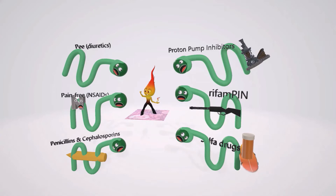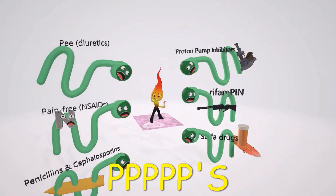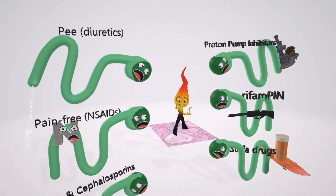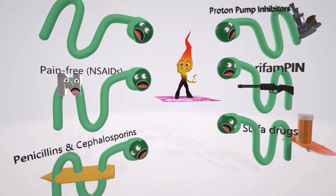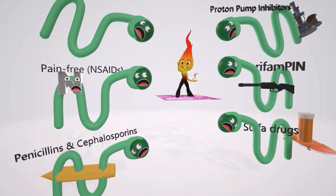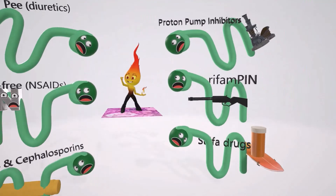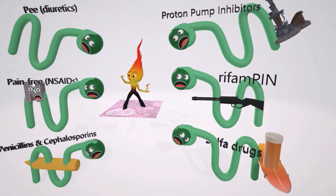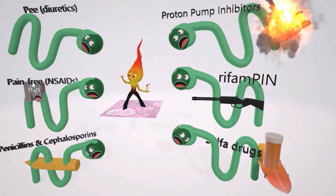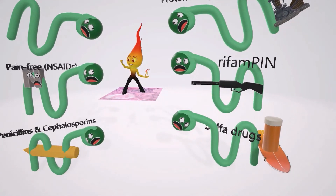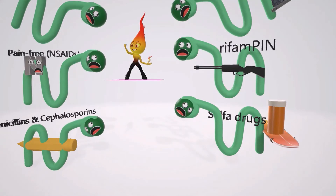To remember what causes this hypersensitivity reaction, remember the five P's. P for diuretics — the nephron is peeing. P for pain-free, such as NSAIDs. P for penicillin — represented by the pencil — as well as the cephalosporins. P for proton pump inhibitors — the exploding proton pump. P for rifampin — the rifle helps us remember that. And S for sulfa drugs — represented by the surfing drugs.